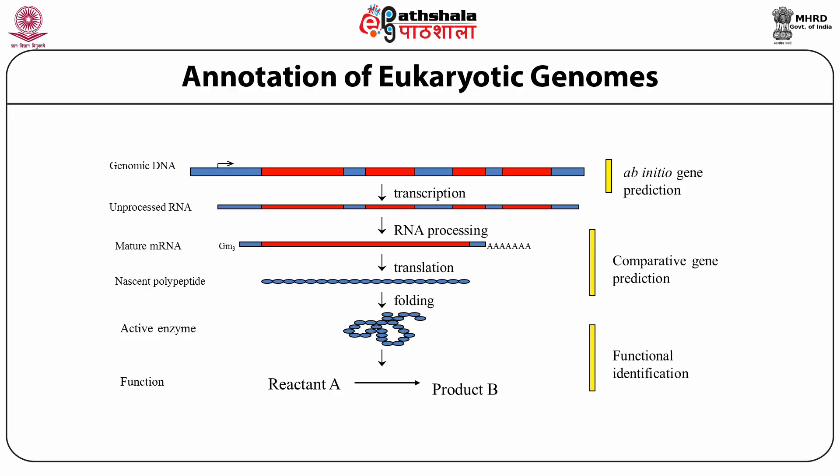You can see here how annotation or function prediction is done. A gene is transcribed into unprocessed RNA, then processed into mature mRNA, and translated into a nascent unfolded polypeptide chain which is subsequently folded into a three-dimensional protein structure — the basic functional unit. At different levels, different tools are used: at the genomic DNA level, ab initio gene prediction methods are used; at the RNA level, comparative genomic prediction tools; and at the protein level, functional identification tools. These are the different levels at which tools can be utilized to annotate the function of any given sequence.